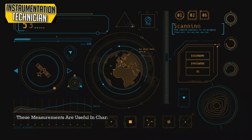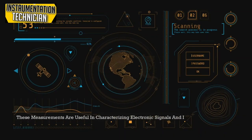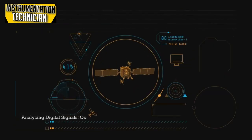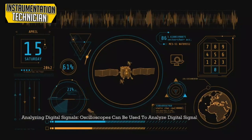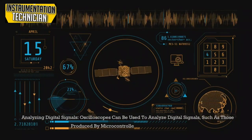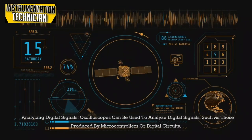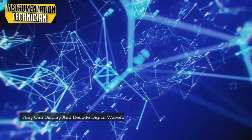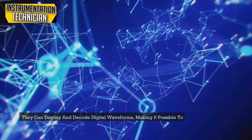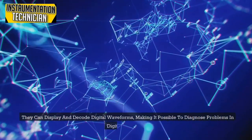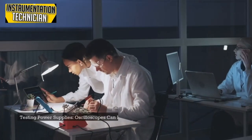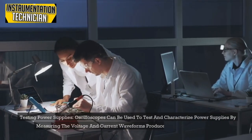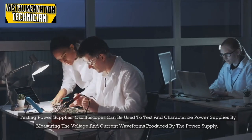Oscilloscopes can analyze digital signals — such as those produced by microcontrollers or digital circuits — displaying and decoding digital waveforms to diagnose problems in digital systems. They are also used to test and characterize power supplies by measuring the voltage and current waveforms produced.